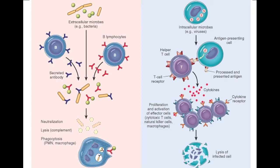After antibodies bind to bacteria — a process called opsonization — the coated bacteria can be destroyed in several ways: by neutralization, by lysis due to complement, and by phagocytosis. In phagocytosis, a polymorphonuclear leukocyte or macrophage uses its FC receptor to bind the antibody-coated bacteria. Through endocytosis — general or receptor-mediated — the bacteria are drawn inside the macrophage. The resulting vesicles merge with lysosomes containing digestive enzymes, the bacteria are digested and eliminated. That's humoral immunity.